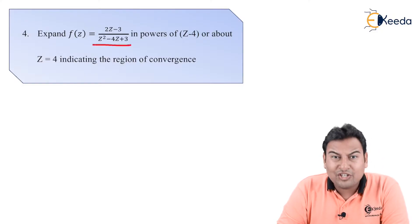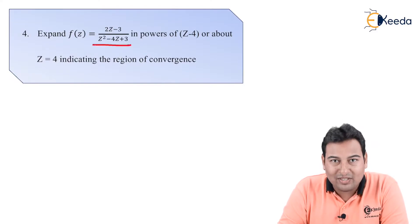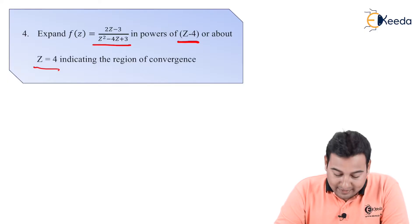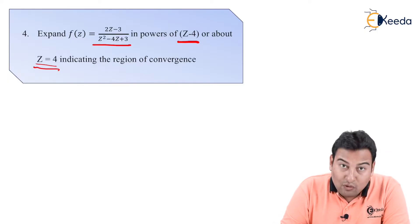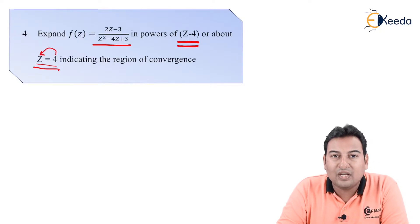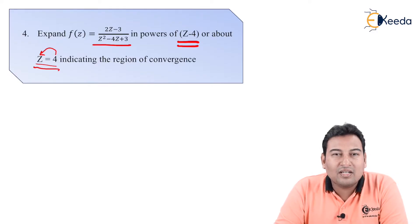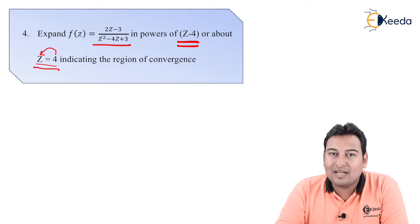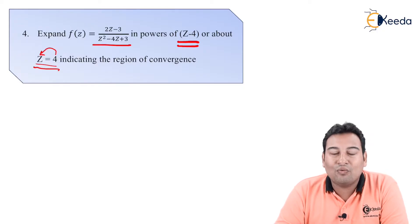An equation is given in the problem, so we can easily find the roots — that is not the twist here. The twist is z is equal to four, or expanding about z minus four. In the last three problems we discussed, all were about the origin or z equal to zero. This is the first problem where it is asked to expand about z equal to four, or in powers of z minus four. So let us see how we can handle this situation.